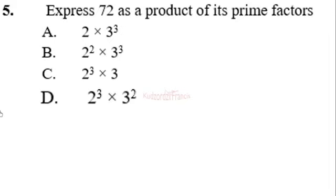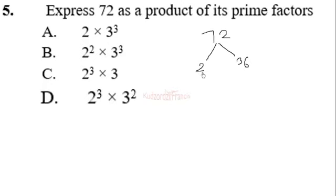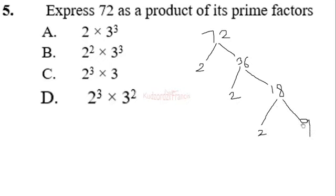Question 5: express 72 as a product of its prime factors. Using a factor tree: 2 goes into 72 giving 36; 2 goes into 36 giving 18; 2 goes into 18 giving 9. Now 2 cannot go into 9, so we move to the next prime, which is 3. 3 goes into 9 giving 3, and 3 is itself prime. So we have used 2 three times and 3 twice.